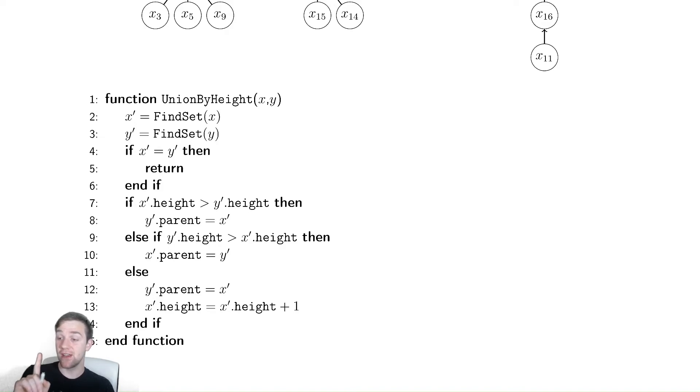And if they are the same, notice we have the trichotomy of the real numbers here. It's either greater than, less than, or equal to. So, if it's equal, we're going to need to combine them and increase the height.